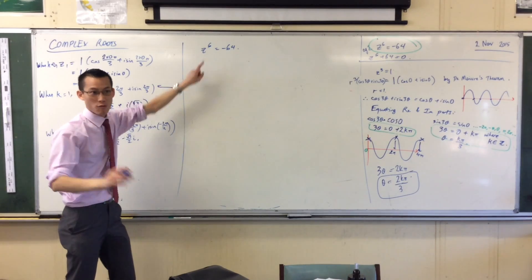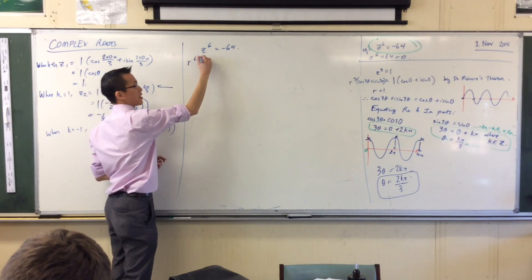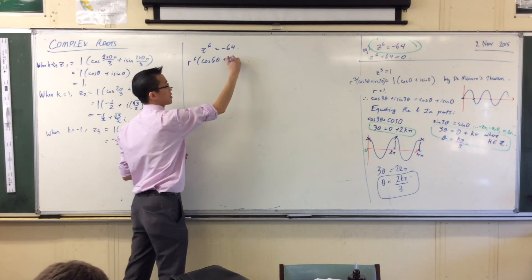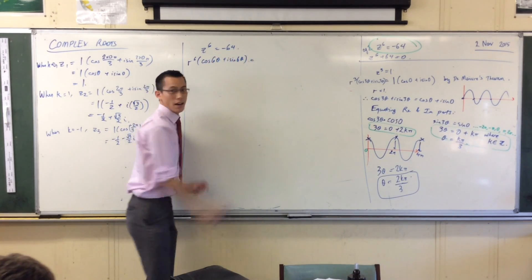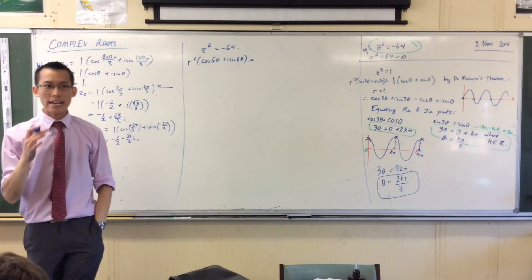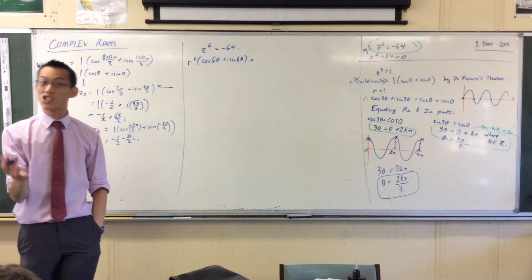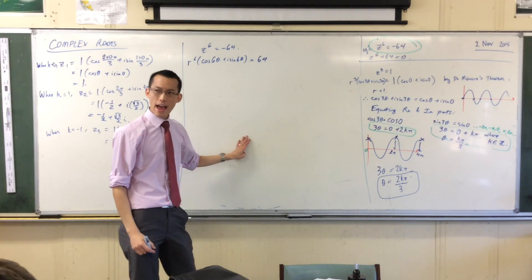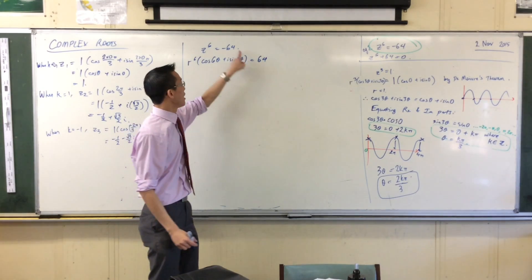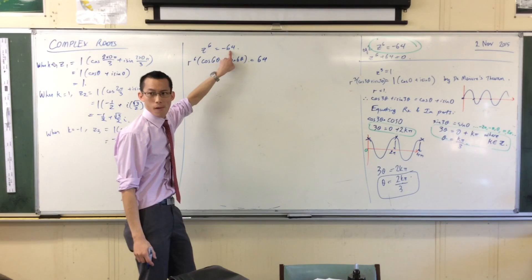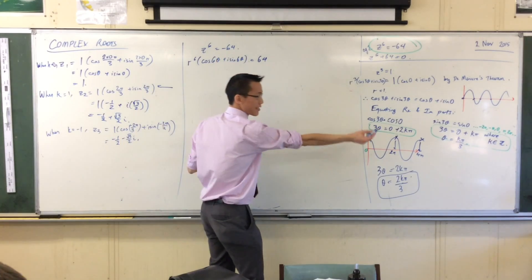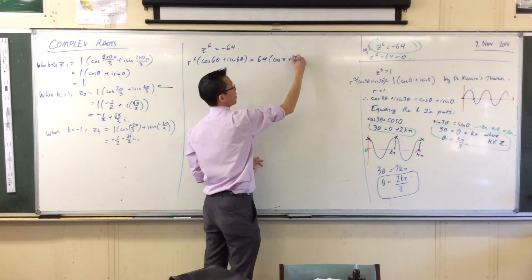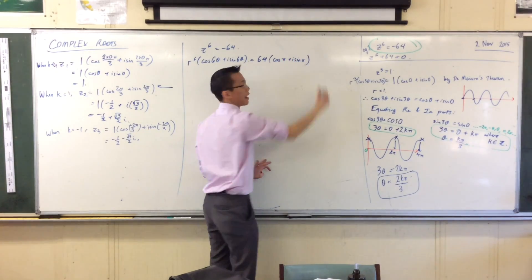Z to the 6 by De Moivre's theorem, how can I write that? R to the 6 cos 6 theta plus I sine 6 theta. Now what's negative 64 in mod arg form? Remember, modulus is just a distance, so I would usually say that in positive terms, 64. What angle do I measure if I'm at minus 64? I've got to go from the positive real axis all the way over to minus 64. So that's pi radians. So I've got this, cos pi plus I sine pi.